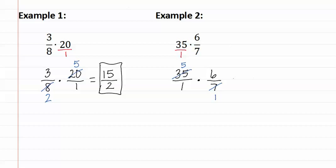We can now multiply the two numerators together and five times six is thirty and one times one is one. Remember thirty over one is the same thing as thirty. So the simplified answer of thirty over one is simply thirty.